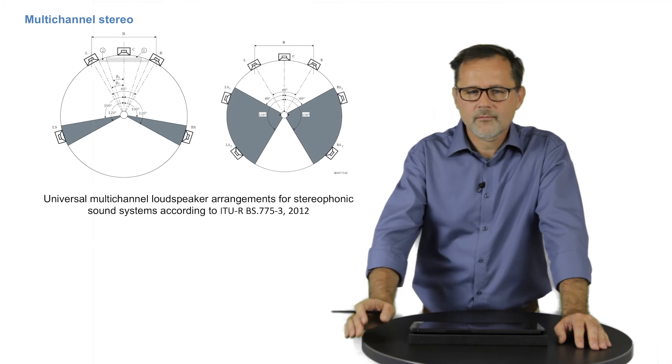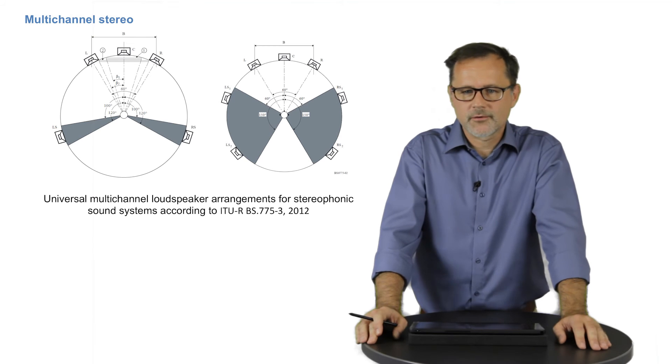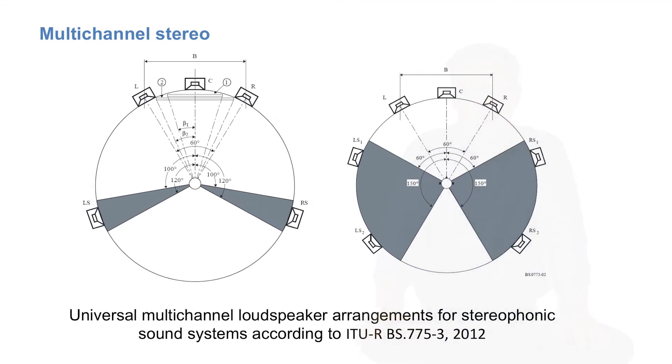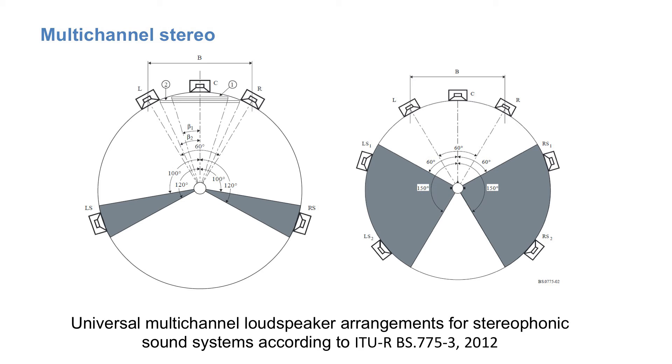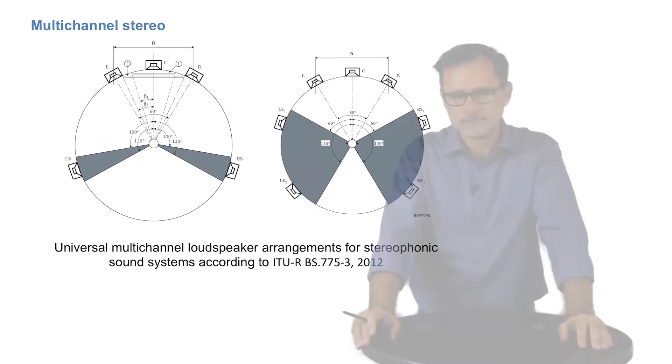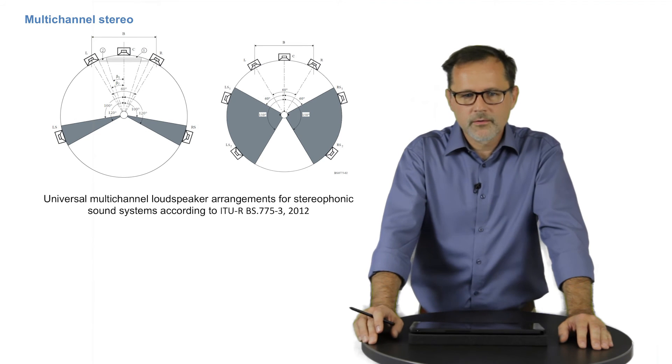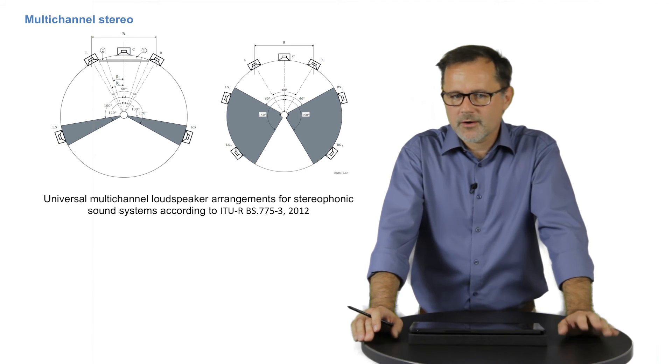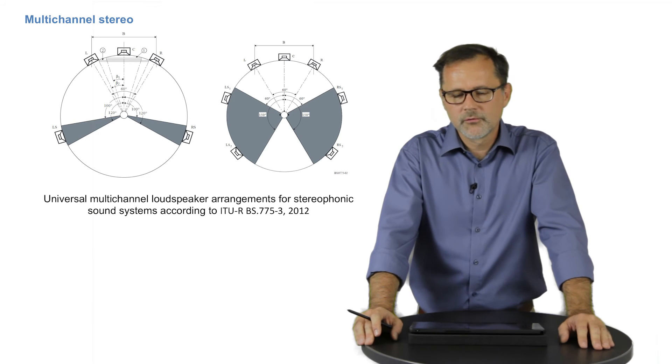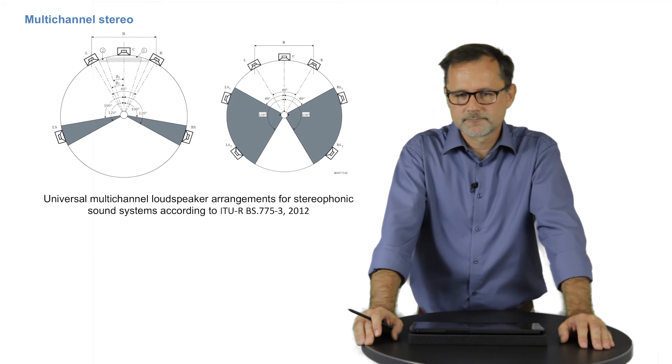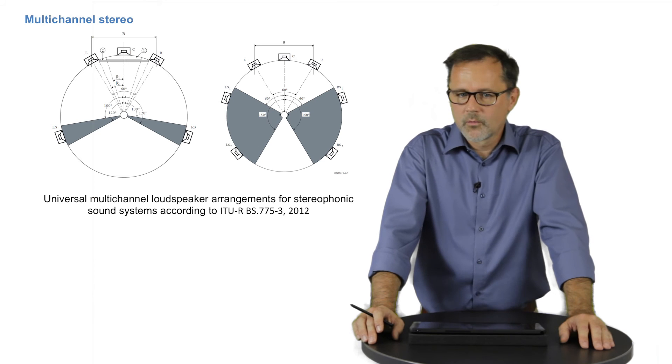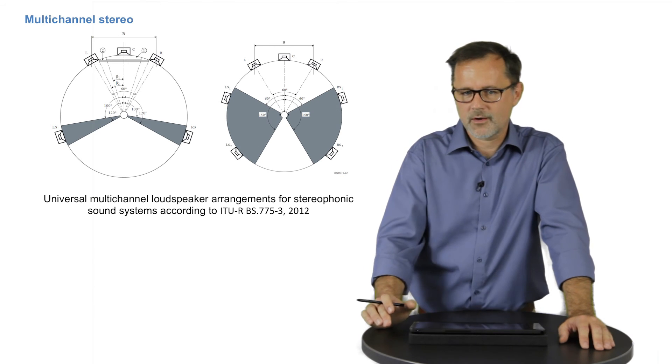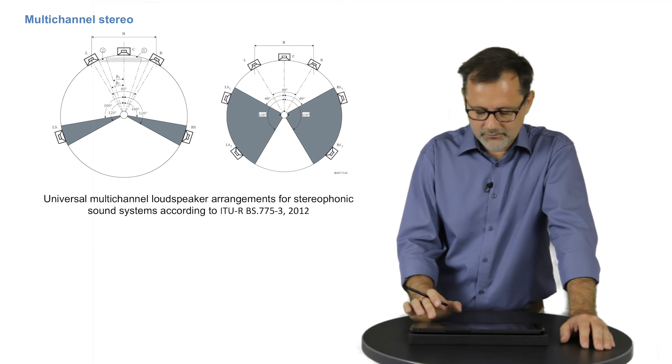Instead, I want to have a look at the recording techniques for multichannel stereo, for example with three channels in front and two surround channels, which are recommended to be reproduced either with two loudspeakers or with two pairs of loudspeakers. As we saw in the first part of this lecture, the lateral loudspeakers can hardly be used to produce a stable phantom source. So the question remains what to do with the three channels in front, and here two approaches have established.